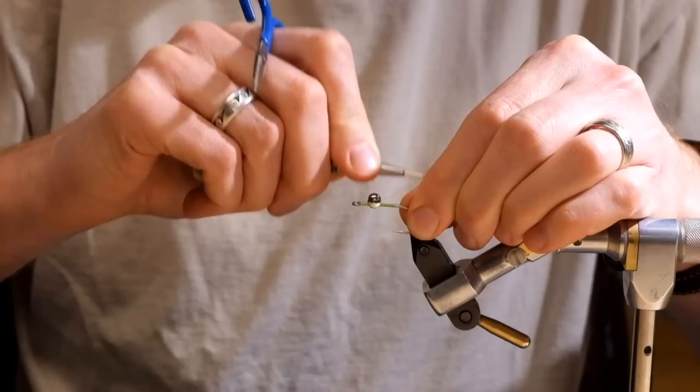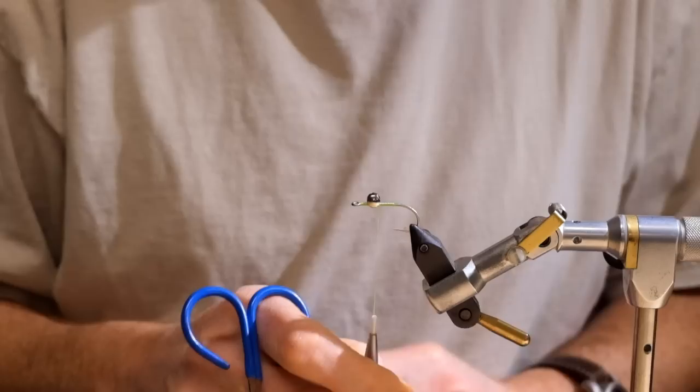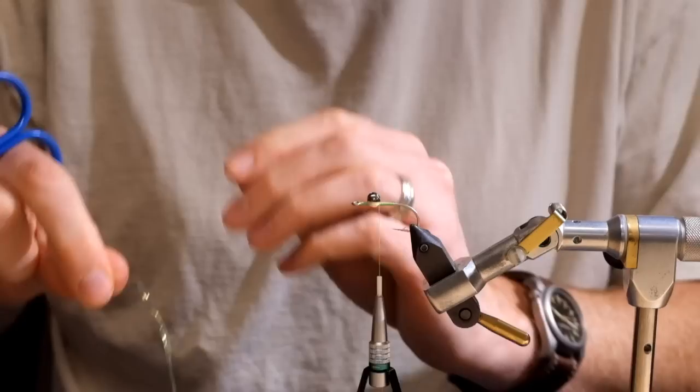After figure eighting, I'm gonna make a few wraps below the eyes but above the hook shank, which sucks those wraps in even more. I'm gonna leave my thread right behind the eyes.